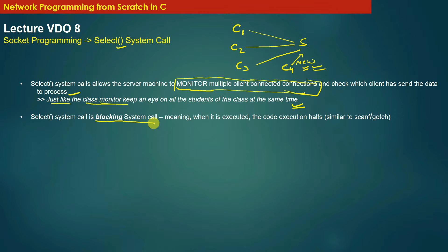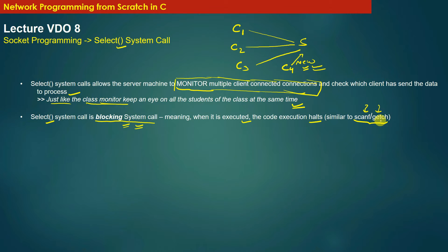The select system call is a blocking system call. The moment the server calls select, execution halts — similar to how scanf or getchar halts program execution. When select is executed, the code execution halts until an event occurs. Such calls are called blocking system calls, and select is one of them.